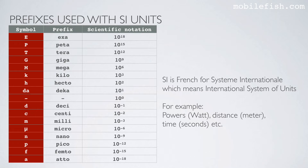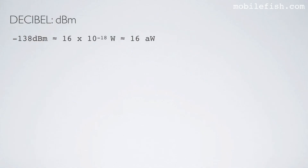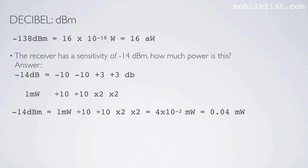Here are prefixes used with SI units. SI is French for Système International, meaning international system of units. These units can be used for powers, distances, time, etc. For example, minus 138 dBm is approximately 16 times 10 to the power of minus 18 watts, which using SI prefixes can be written as 16 attoWatts. Please try to convert this dBm value to its corresponding power yourself.